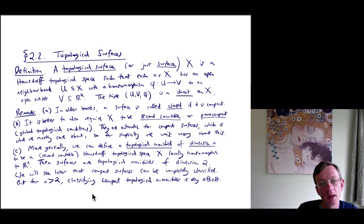So now let's define topological surfaces. A topological surface, or in this part of the course we'll often just refer to them as surfaces, a surface X is a Hausdorff topological space, such that each point little x in big X has an open neighborhood U, together with a homeomorphism phi going from U into V, to an open subset V containing R². So the triple U and V and phi is called a chart on X.